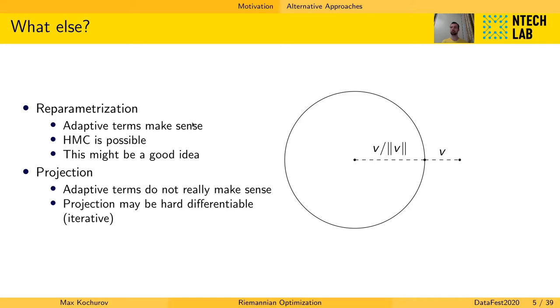If you use projection then adaptive term doesn't really make sense because the degree of freedom is incorporated in your adaptive term on unconstrained domain. And this projection may be hard to differentiate through like on Birkhoff polytope you run Sinkhorn iterations. So this is quite problematic.